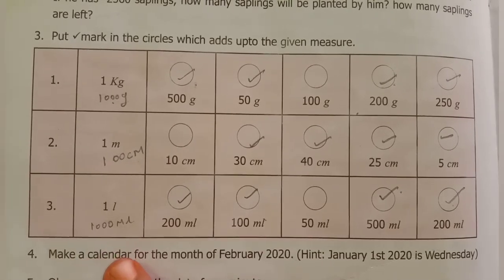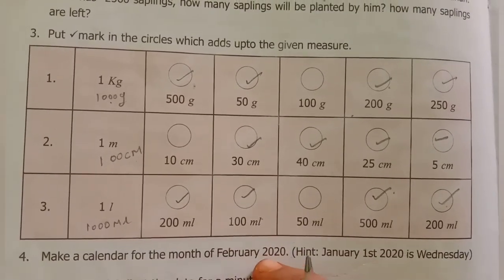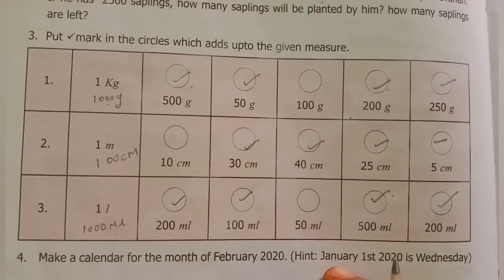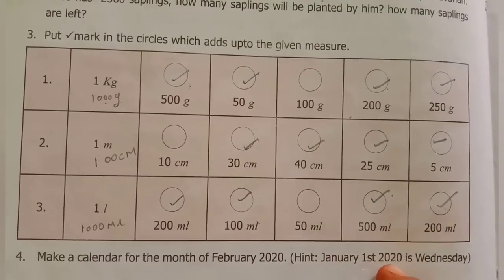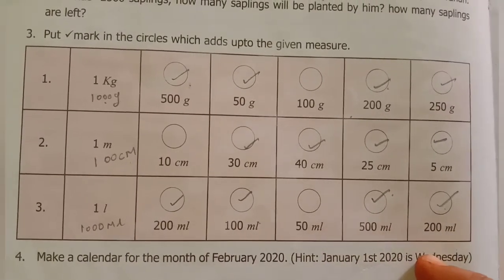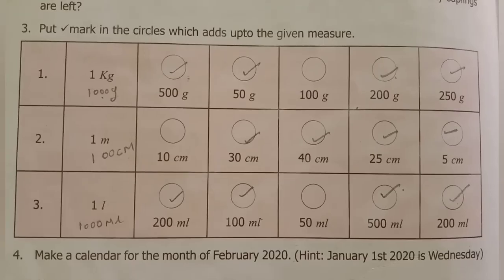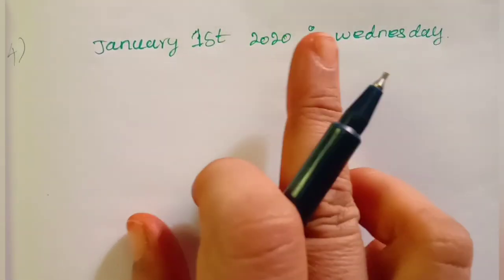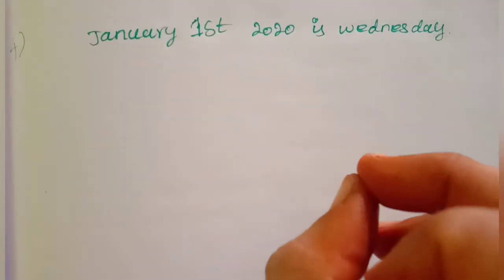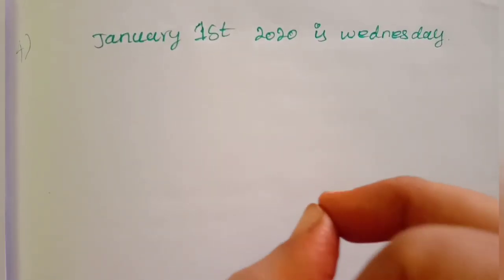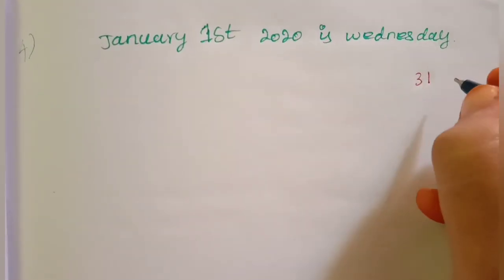Next problem: Make a calendar for the month of February 2020. We are given that January 1st is a Wednesday. January has 31 days. We divide 31 days by 7 days to find the number of complete weeks and determine which day February 1st falls on.